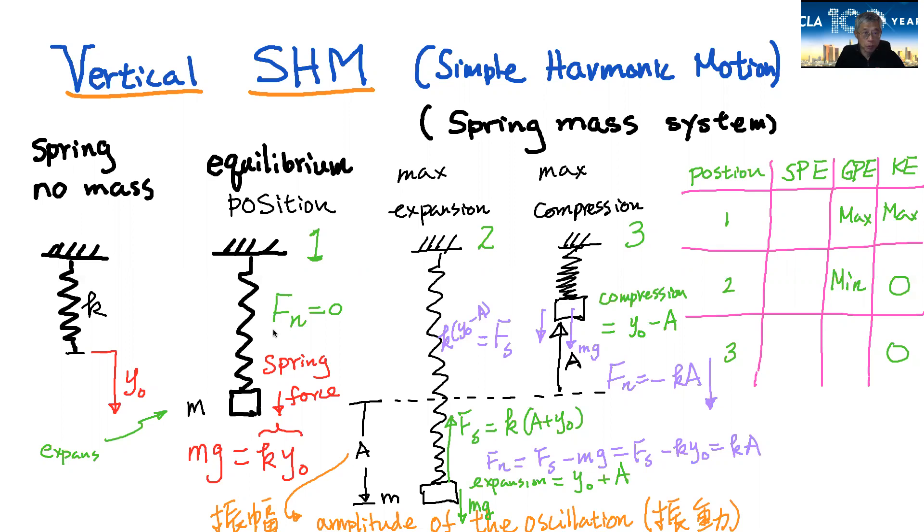At that position, your net force is equal to zero. So then you know your mg is equal to the spring force Fs, which is equal to ky0. Since your displacement from here to here is y0. So according to Hooke's law, this is ky0.